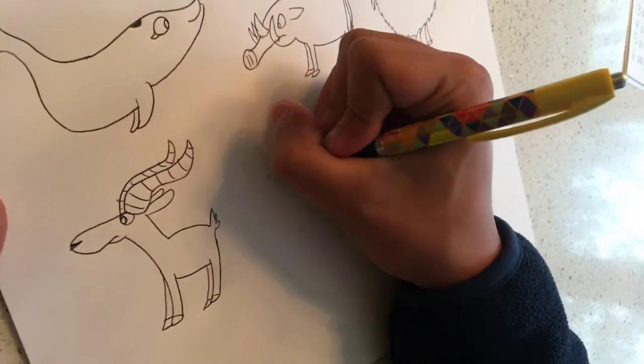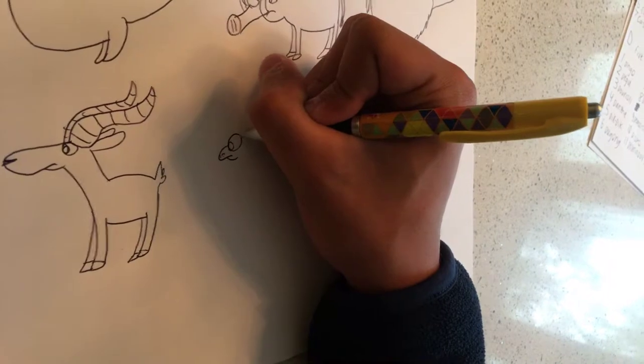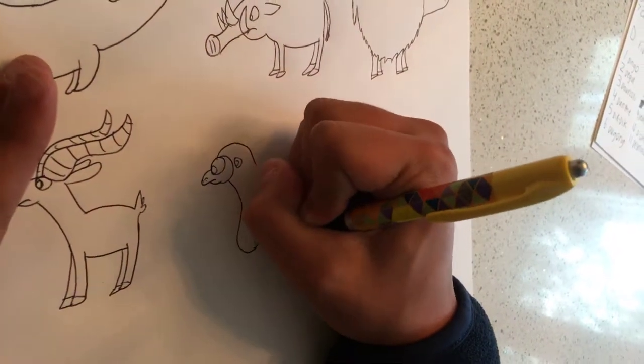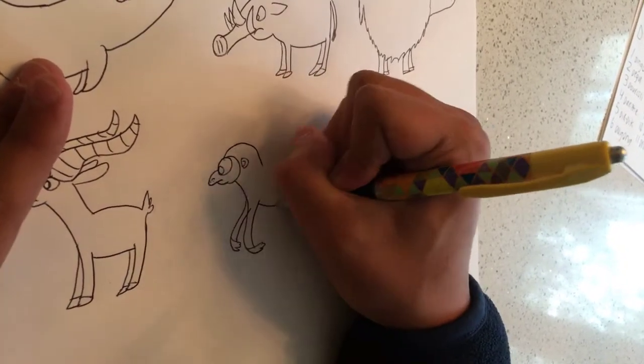B is for bonobo. The bonobo is also a pygmy chimpanzee. The bonobo is endangered. The bonobo is highly at risk.